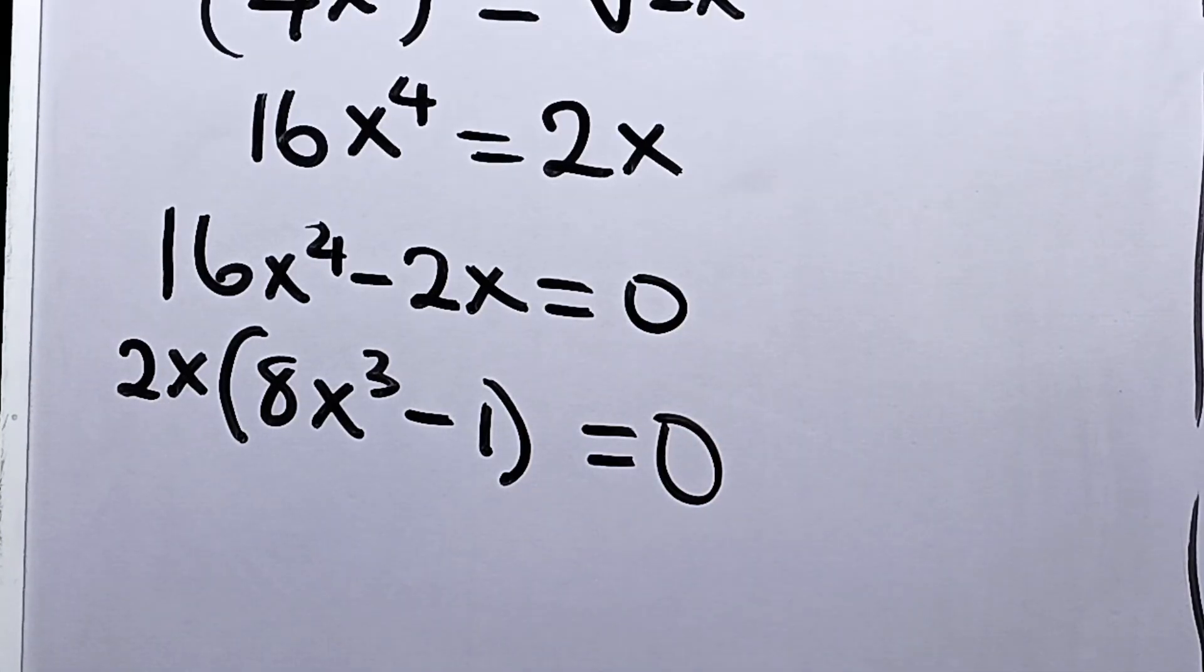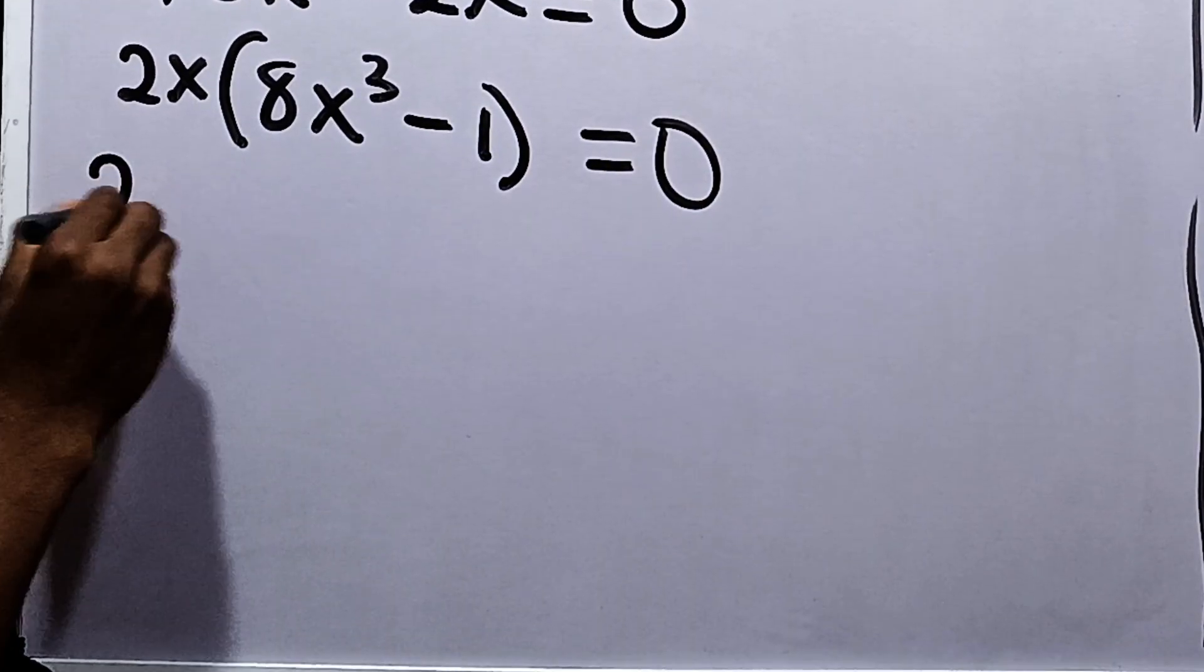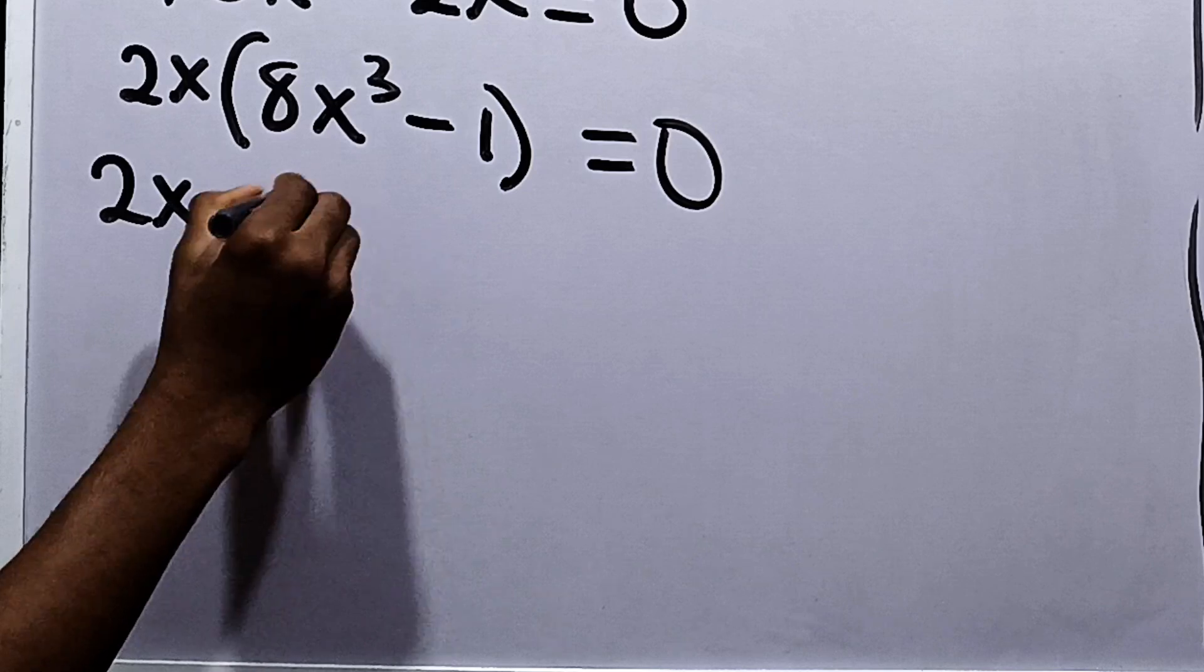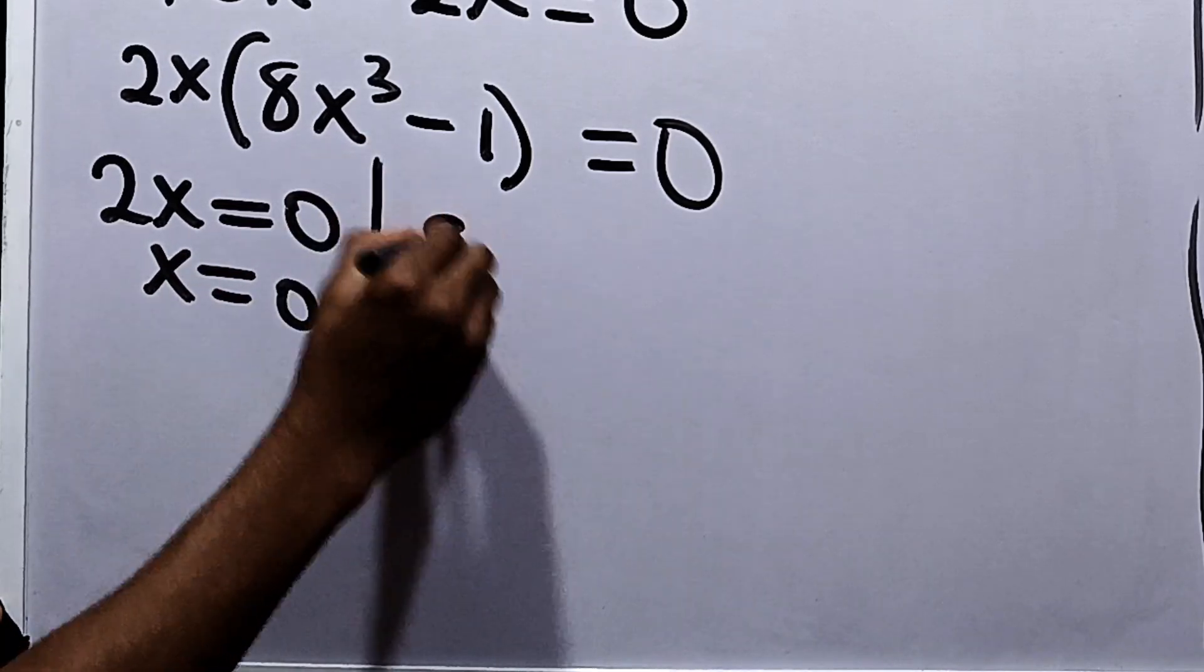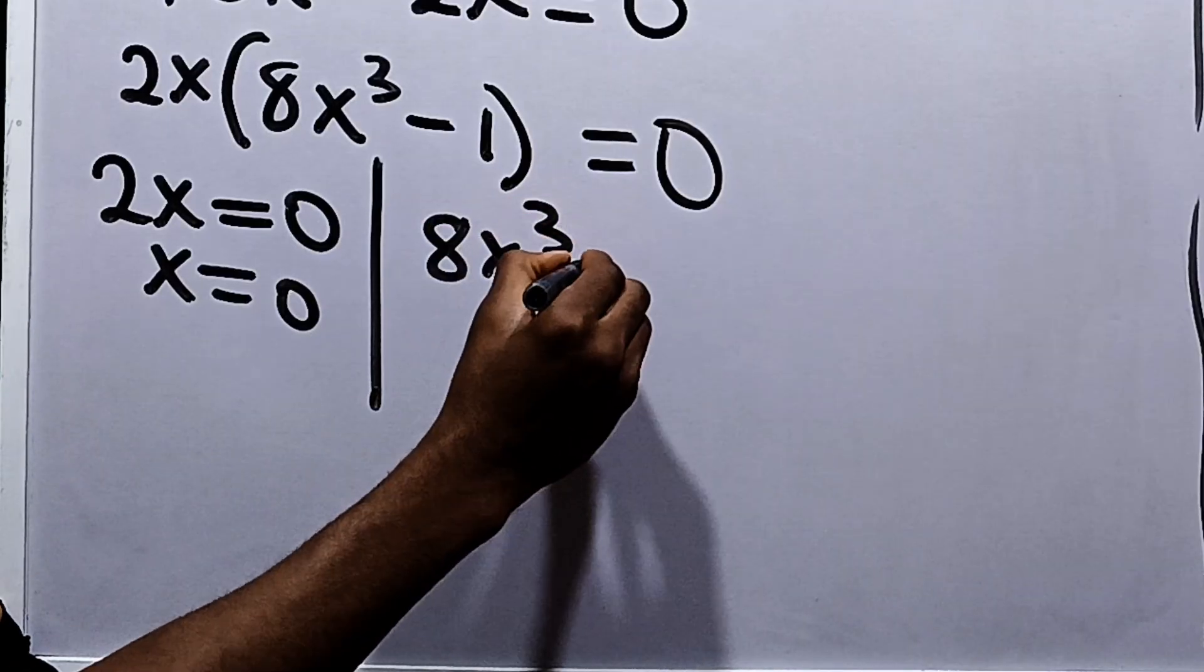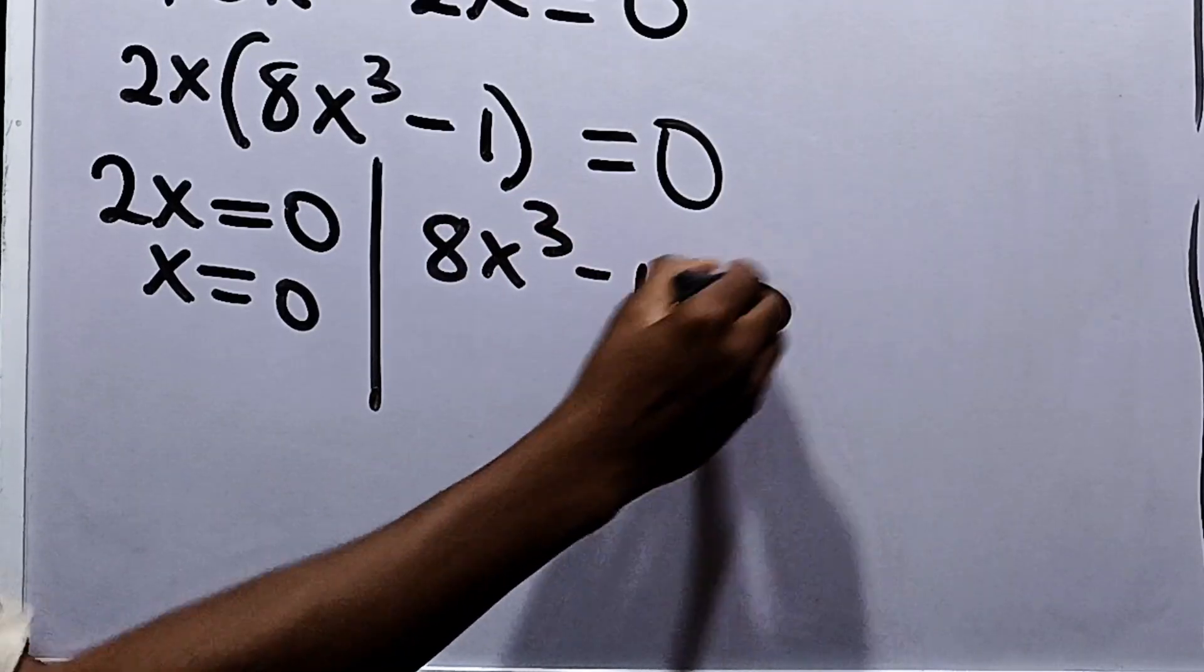Now from here we can say it's either that 2x is equal to 0, which implies that x is equal to 0, or 8x cubed minus 1 is equal to 0.